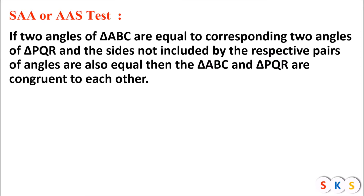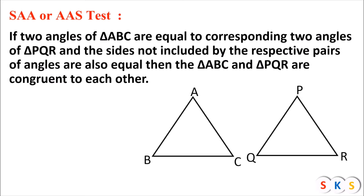Triangle ABC and triangle PQR are congruent to each other. Now we will try to understand this test with the help of an example. Here we have two triangles ABC and PQR. In triangle ABC and triangle PQR, look at this figure.